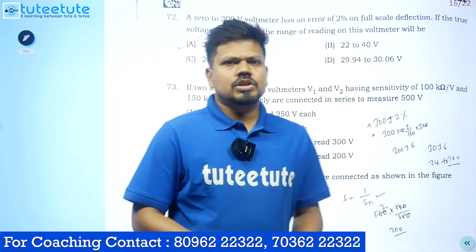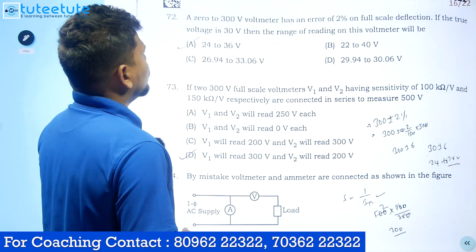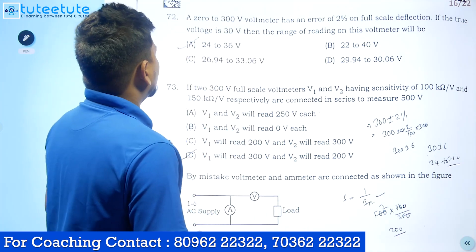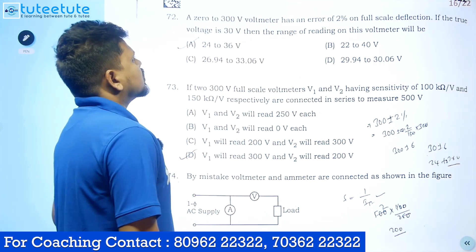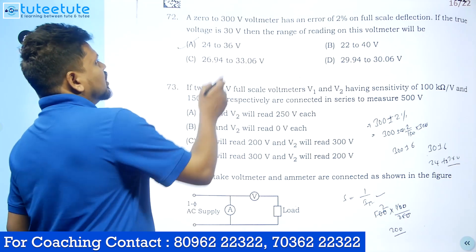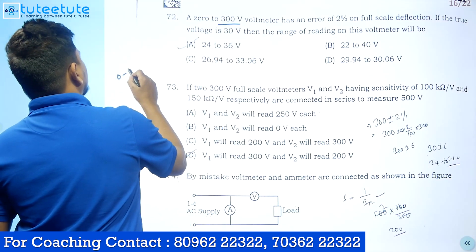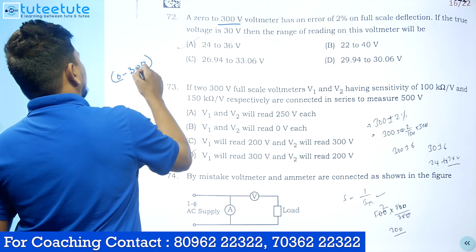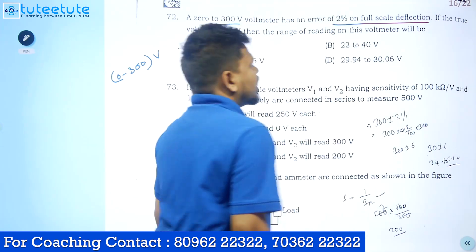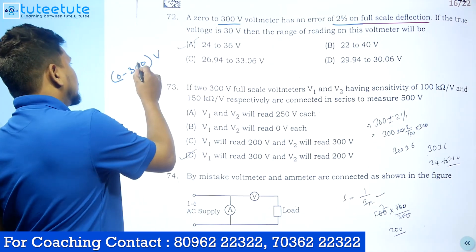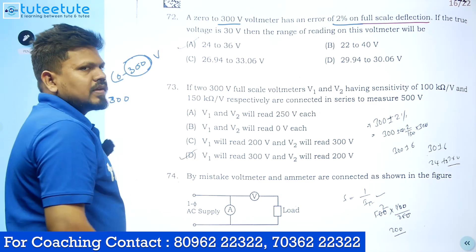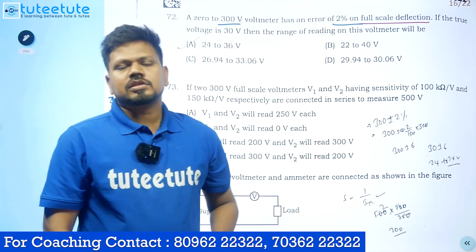The next question: a 0 to 300 volt voltmeter has an error of 2 percent on full scale deflection. If the true voltage is 30 volts, then the range of reading on this voltmeter will be? The range of the instrument is 0 to 300 volts. The error is 2 percent on full scale deflection, meaning 300 volts is the full scale deflection.